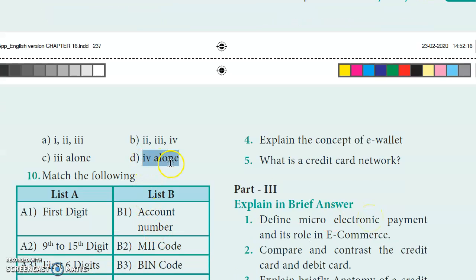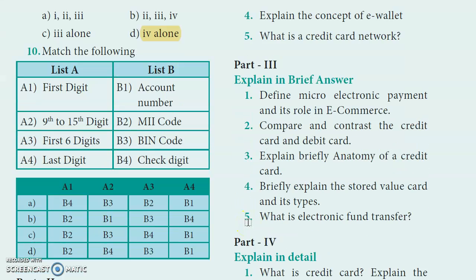Tenth question: Match the following. The first digit of the card represents the Major Industry Code. Digits 2 to 6 are the issuer identification. Digits 7 to 15 are the account number. The last digit is the check digit. Option B is the correct answer.